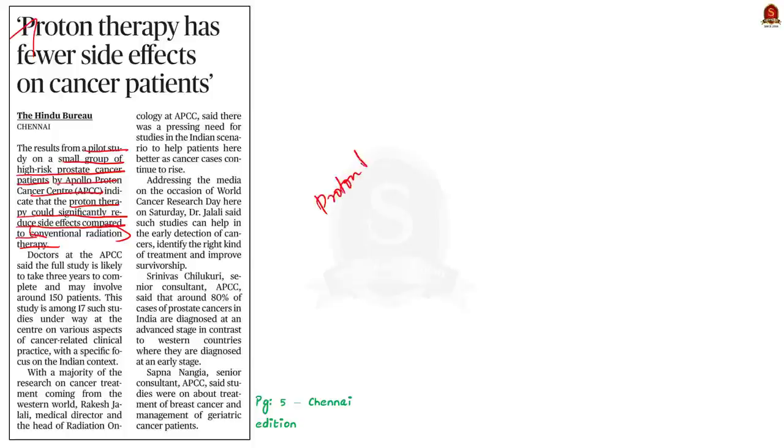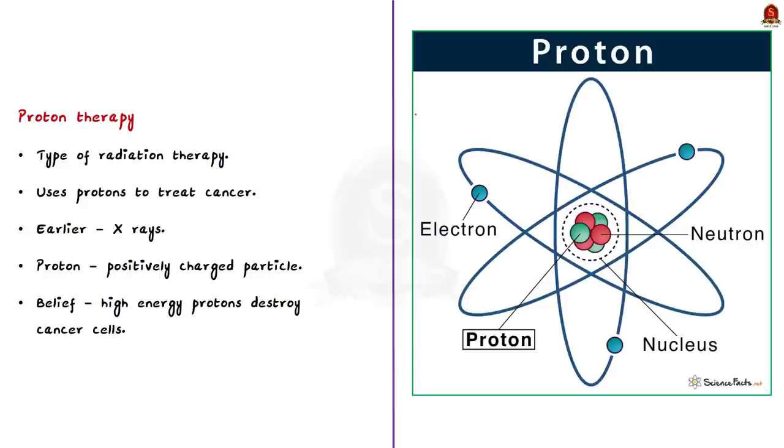In this context we are going to understand what is proton therapy. Proton therapy which is also called as proton beam therapy is a type of radiation therapy. It uses protons to treat cancer and that is why the name proton therapy is given. So far radiation therapy that uses x-rays are used to treat cancer. But proton therapy is a newer type of radiation therapy in this field. That is why it has made news today.